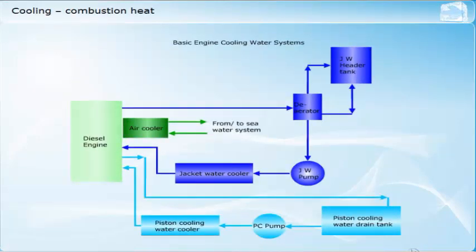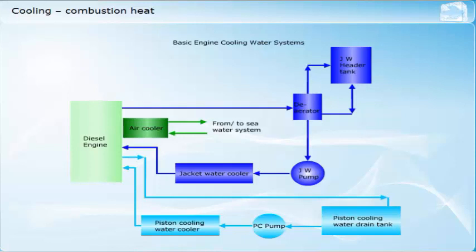The vast majority of water-cooled engines use fresh water as the primary coolant for the static components forming the combustion chamber. This is achieved by circulating the water through the space between the cylinder liner and the cylinder block, and the liner and the cylinder jacket. The system is therefore referred to as the jacket cooling water system. The water enters at the bottom of the cylinder liner and passes up the jacket and through the cylinder cover as it exits the engine.